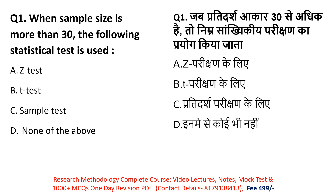First question: which statistical test will we use when you have a sample size of more than 30? Remember that when you have a sample size greater than 30, you will use a specific test. The tests include the Z-test and the T-test. Z-test and T-test are both parametric tests used to compare population means.